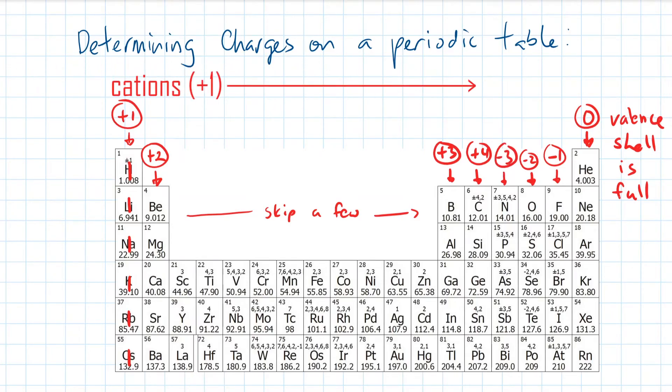In general, with cations, count across from the left starting with a charge of plus one, and with anions, count backwards from the right starting with a charge of zero.